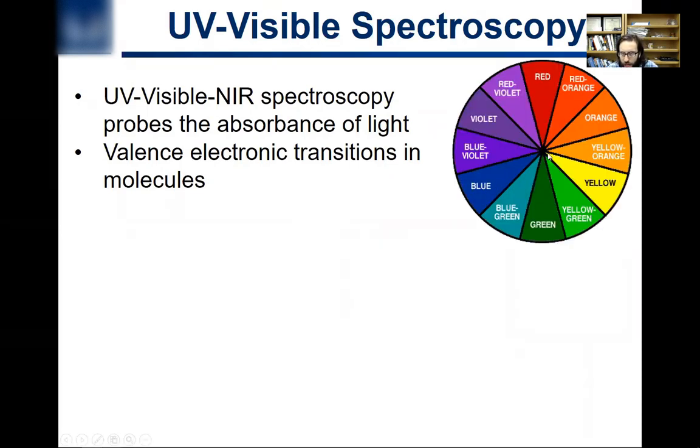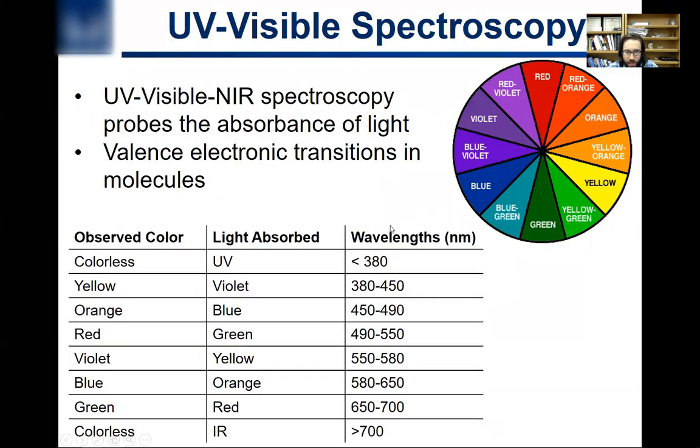And remember this color wheel with the complementary colors. So if something absorbs yellow light, for example, predominantly it's going to appear violet. If something absorbs violet light, it's going to appear yellow.